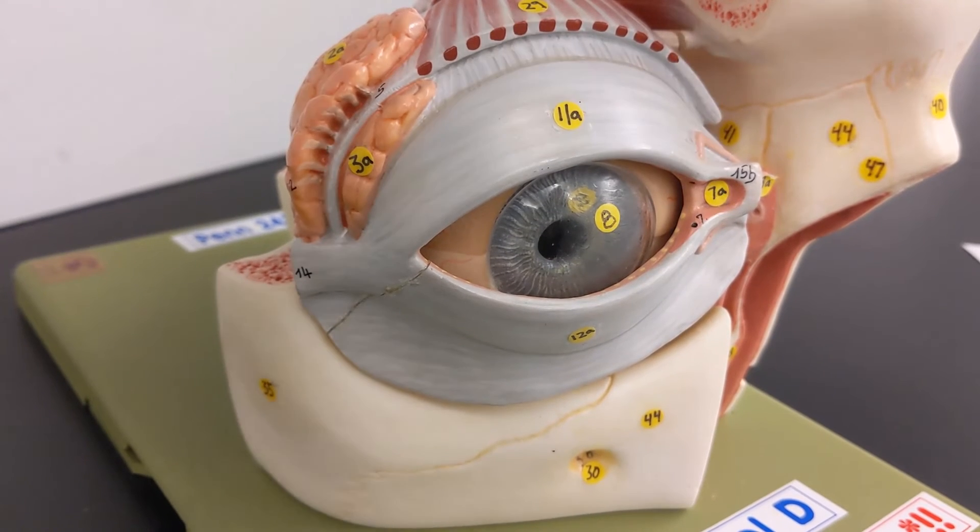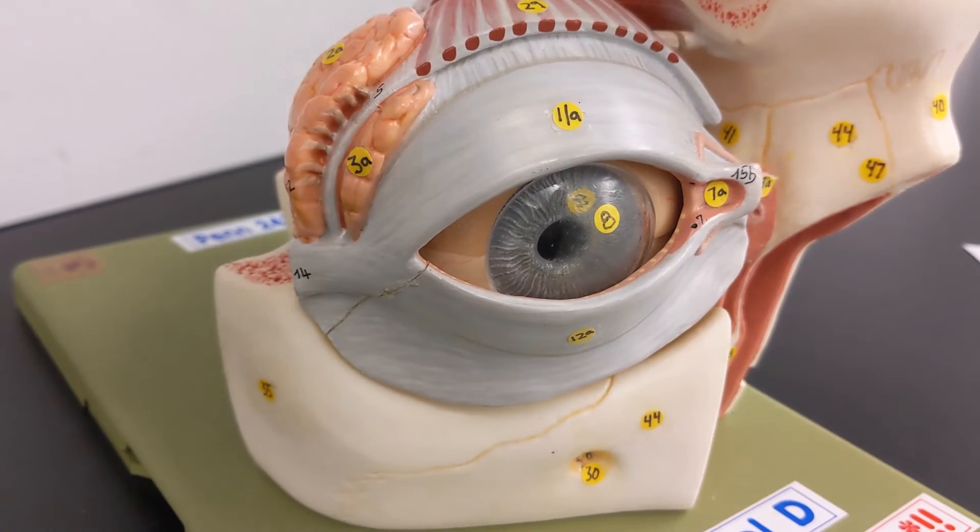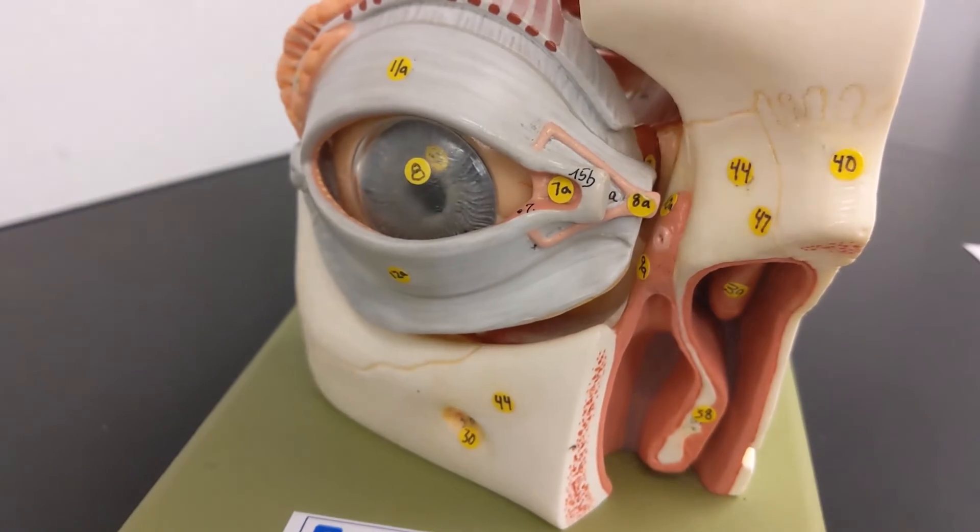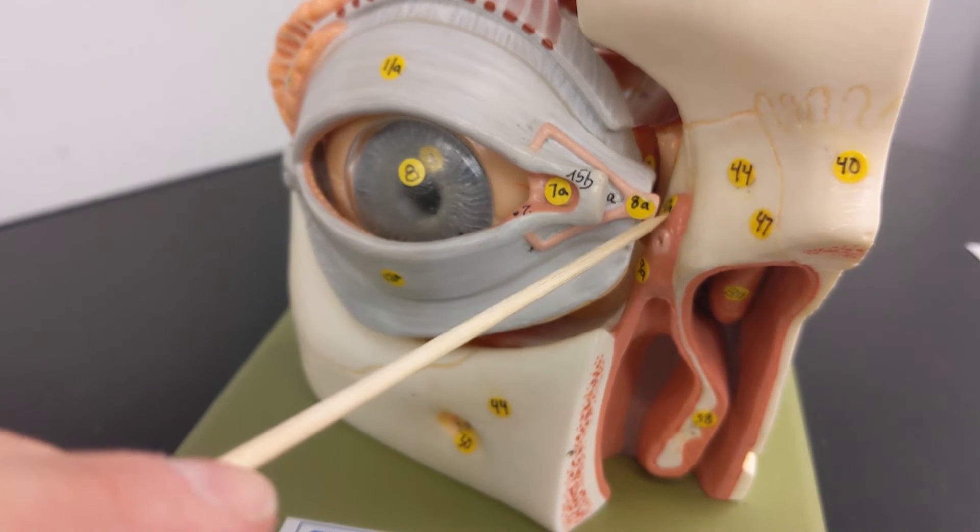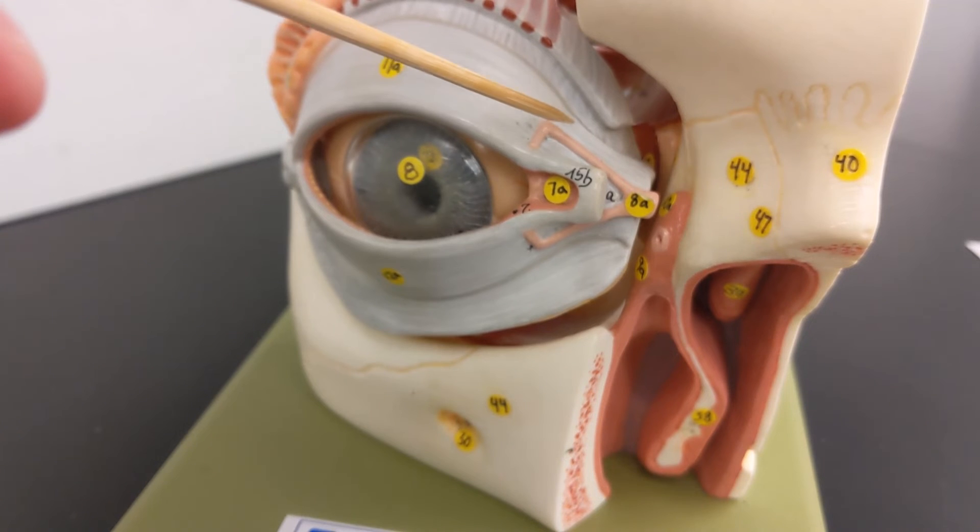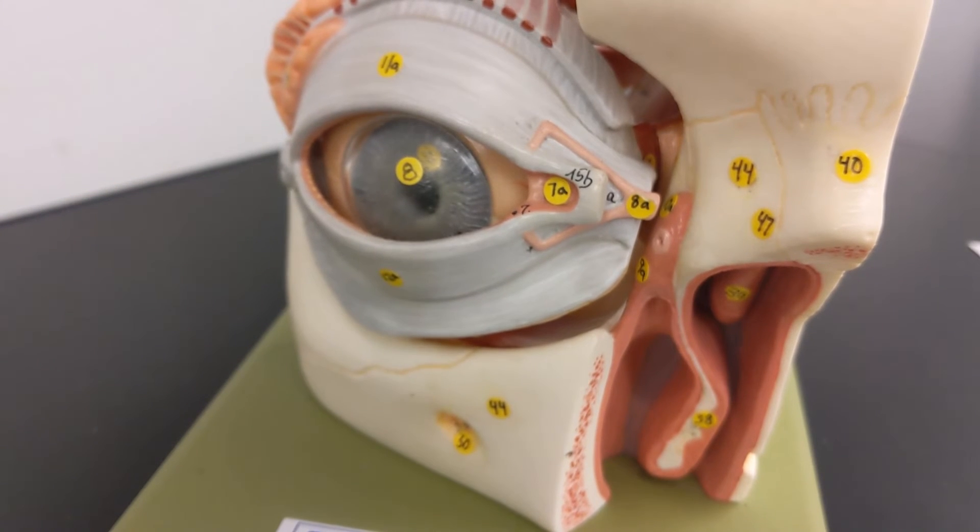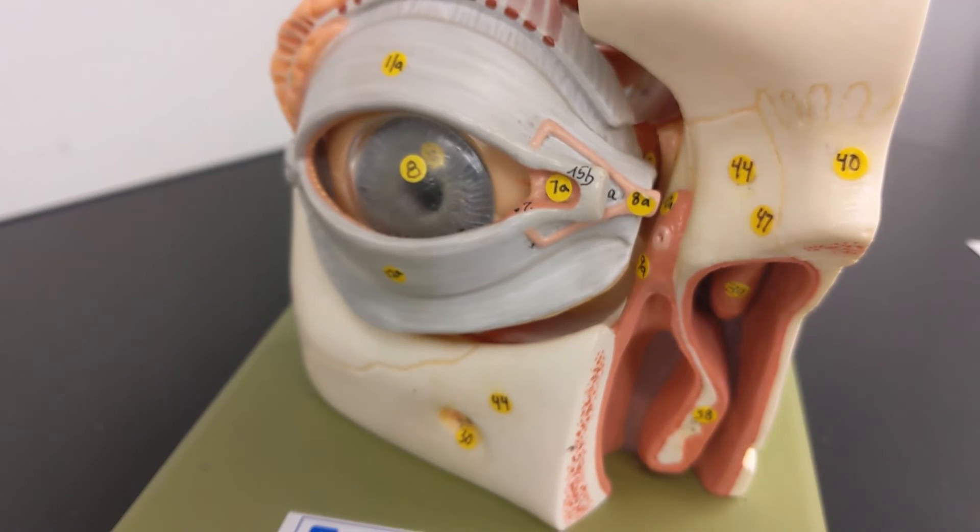Now the purpose of those little holes is to drain into these little tubes. And those little tubes lead to this. So these are the lacrimal canals, also I think sometimes called lacrimal canaliculi. And that leads to the lacrimal sac.